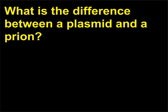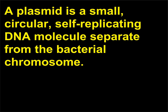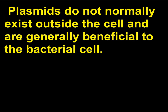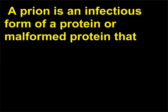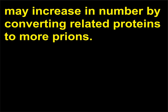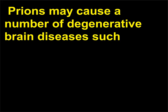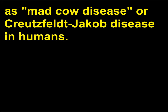What is the difference between a plasmid and a prion? A plasmid is a small, circular, self-replicating DNA molecule separate from the bacterial chromosome. Plasmids do not normally exist outside the cell and are generally beneficial to the bacterial cell. Plasmids are often used to pick up foreign DNA for use in genetic engineering. A prion is an infectious form of a protein or malformed protein that may increase in number by converting related proteins to more prions. Prions may cause a number of degenerative brain diseases, such as mad cow disease or Creutzfeldt-Jakob disease in humans.